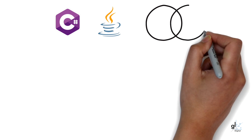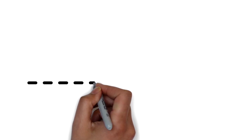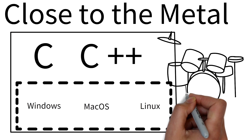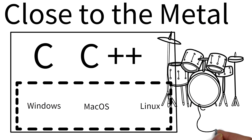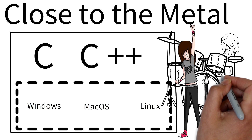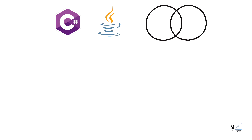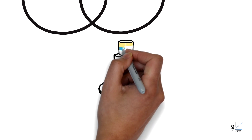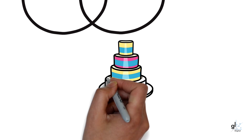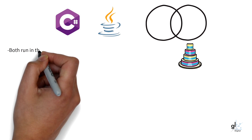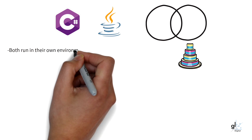Some programming languages like C and C++ can run close to the metal, meaning code can run directly on the operating system. Both C-Sharp and Java run on top of an additional layer that in turn runs on top of the operating system. C-Sharp runs on .NET and Java runs on the JRE, Java Runtime Environment. Both environments provide services that abstract away common repetitive tasks like handling security, exception handling, memory management, and garbage collection.